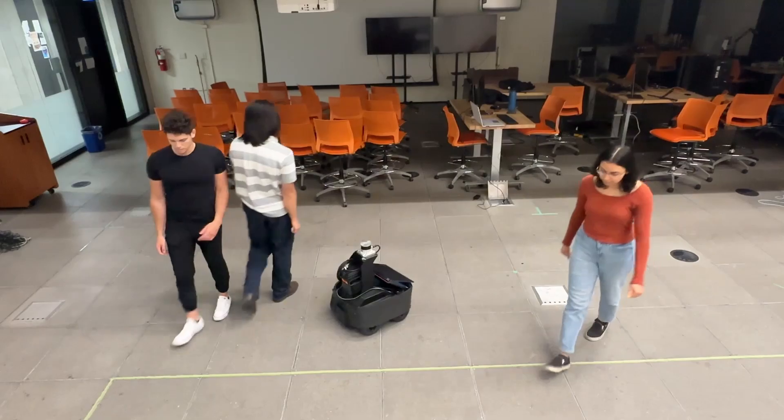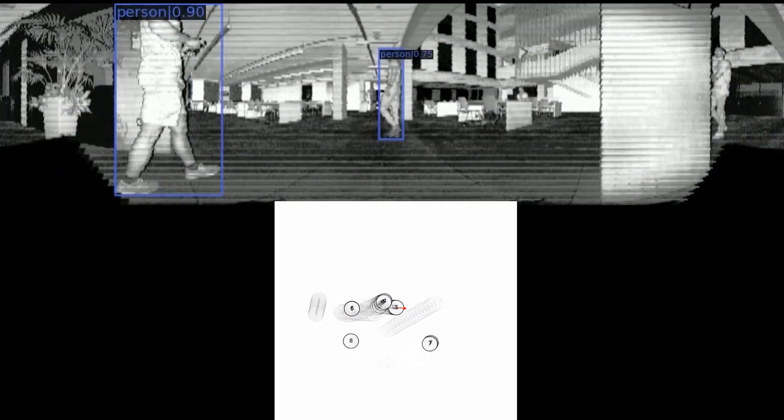Part 2 is adding in humans. We run off-the-shelf YOLOX on the reflectivity image and use the LiDAR's depth information to track humans in the world space.